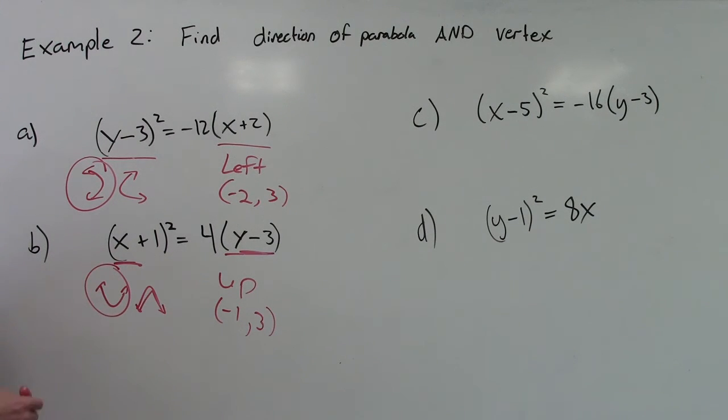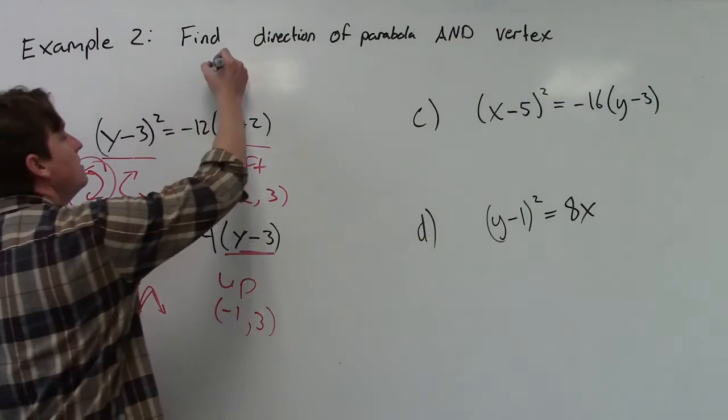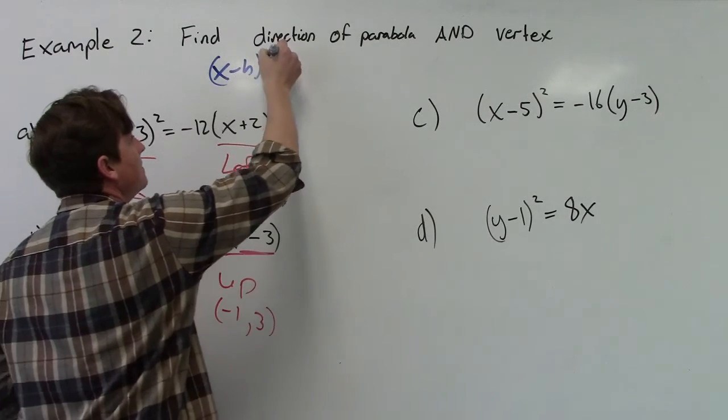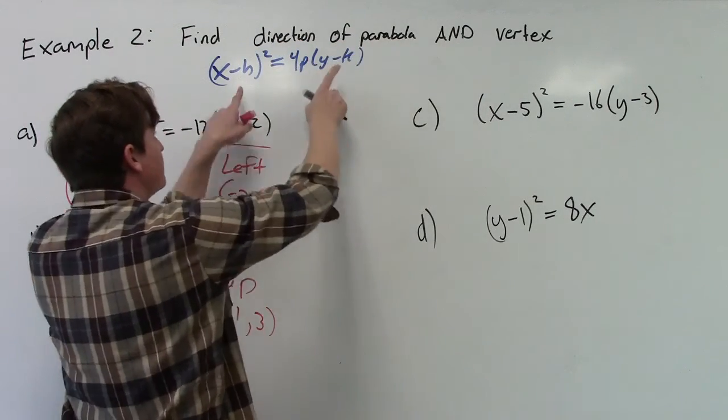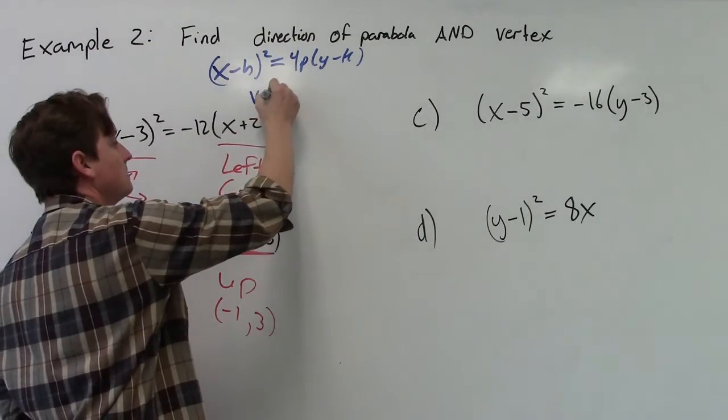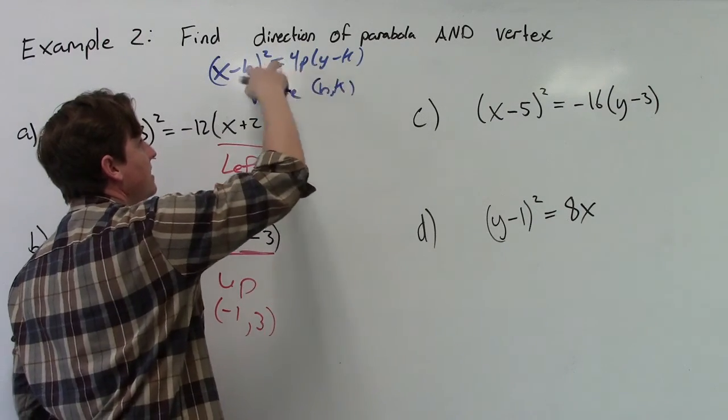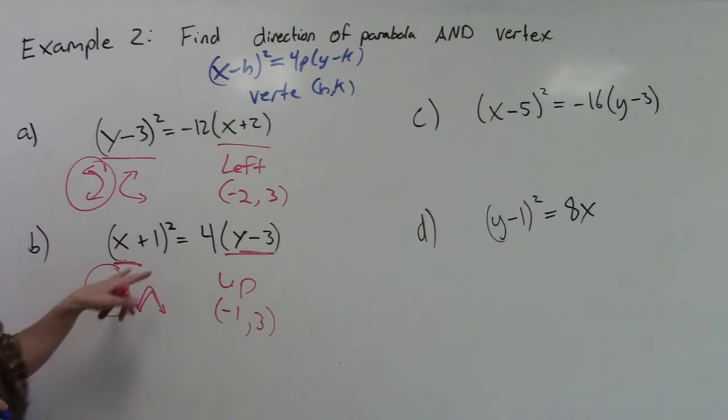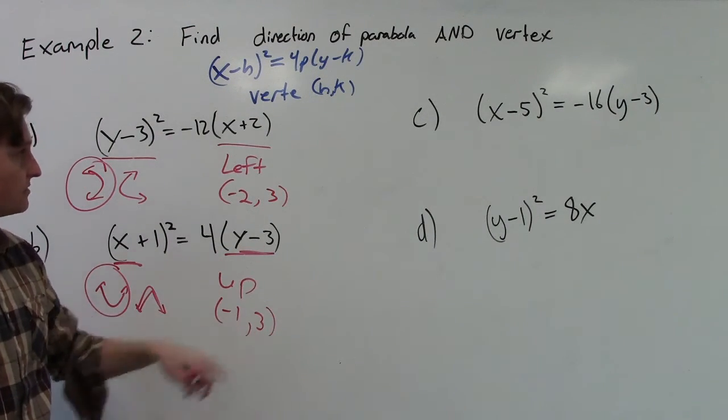But in our original focal form equation, remember that we had (x - h)² equals 4p times (y - k). So there's already like a minus h and a minus k, and the vertex is just a regular h and k. So that's why they need to shift signs here. So if this is positive, a negative 1 goes here. If this is negative 3, a positive 3 goes here.